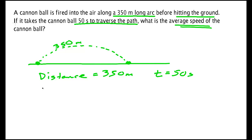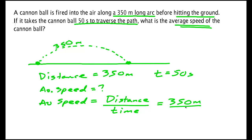And it asks for the average speed. We don't know what that is. We need some formulas. Definition of average speed is distance over time, which means that's 350 meters over 50 seconds, which is 7 meters per second.